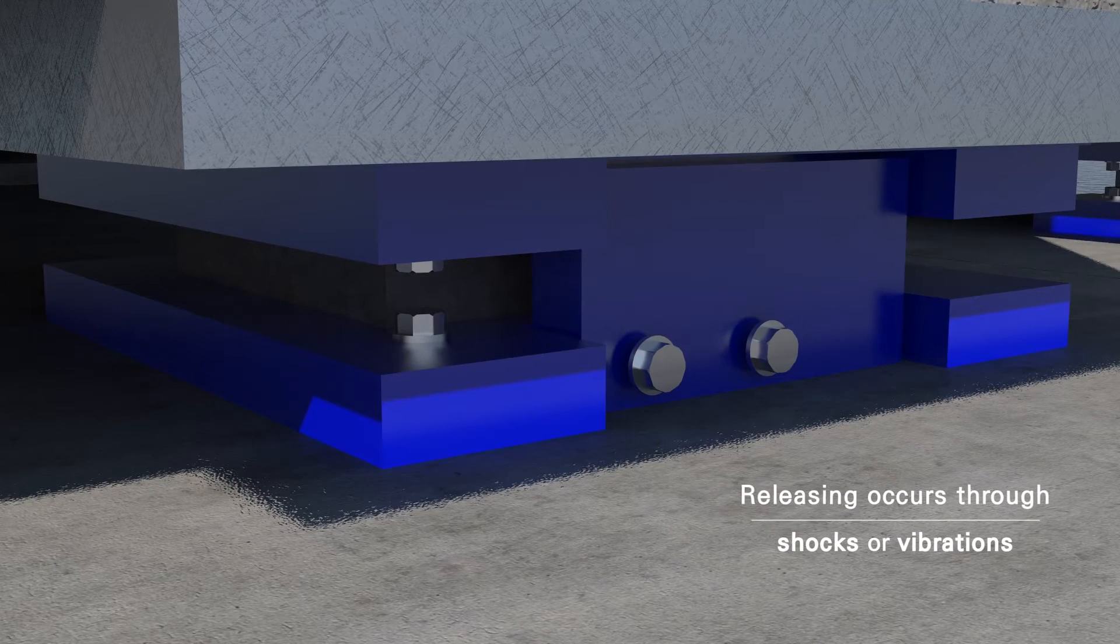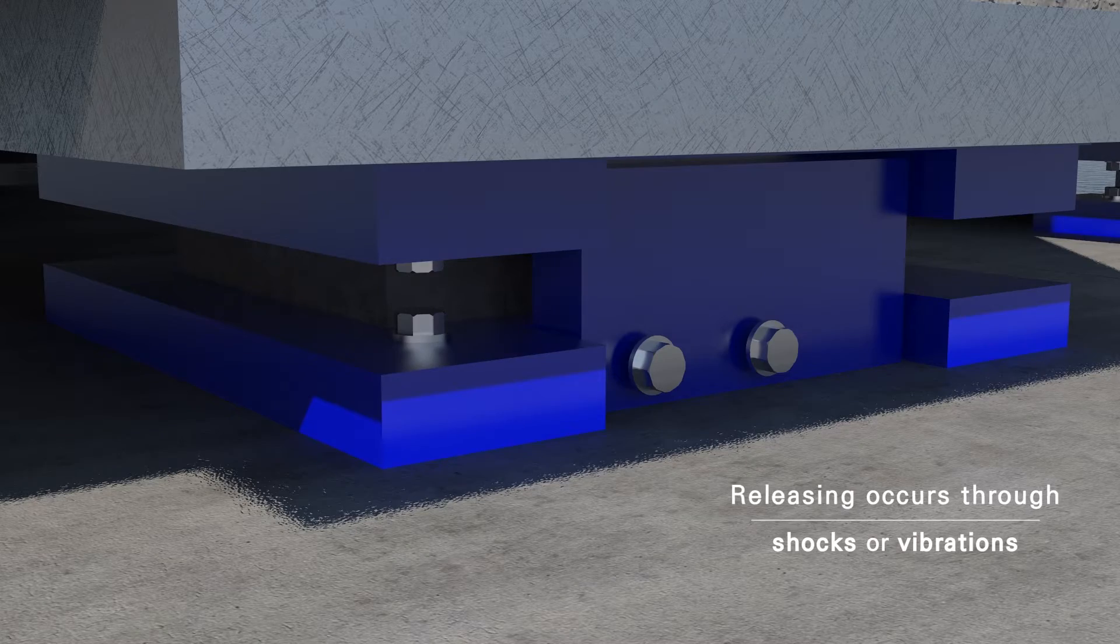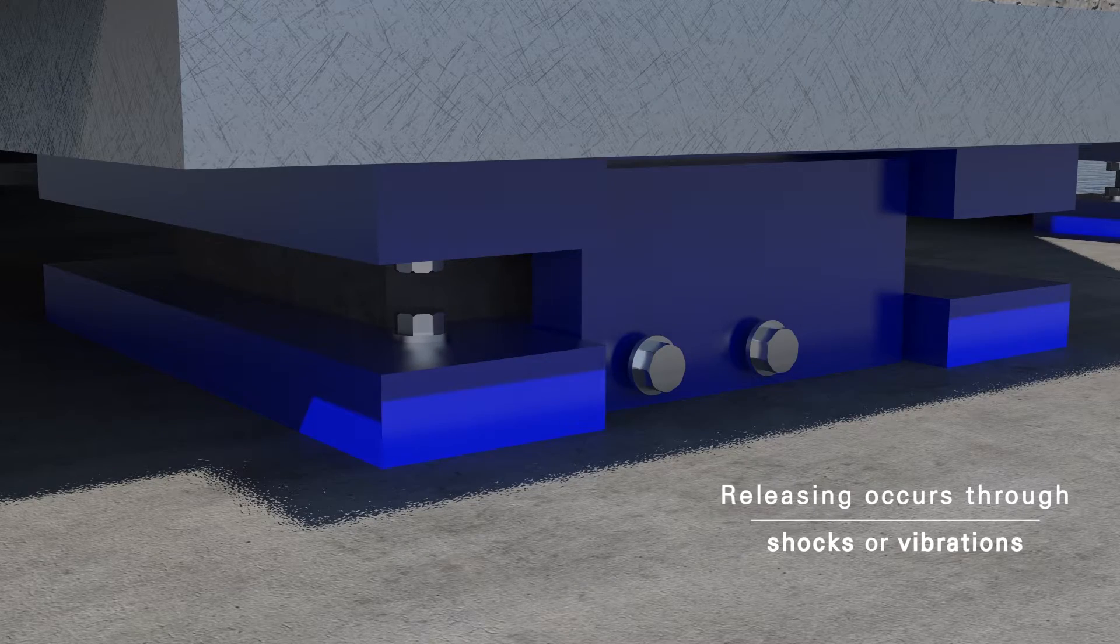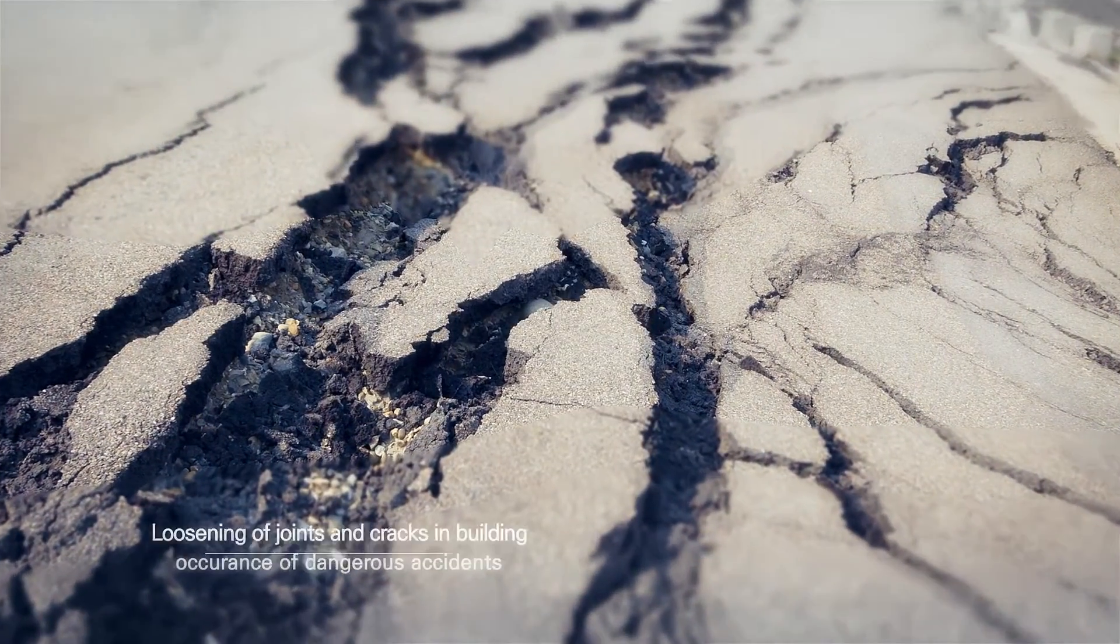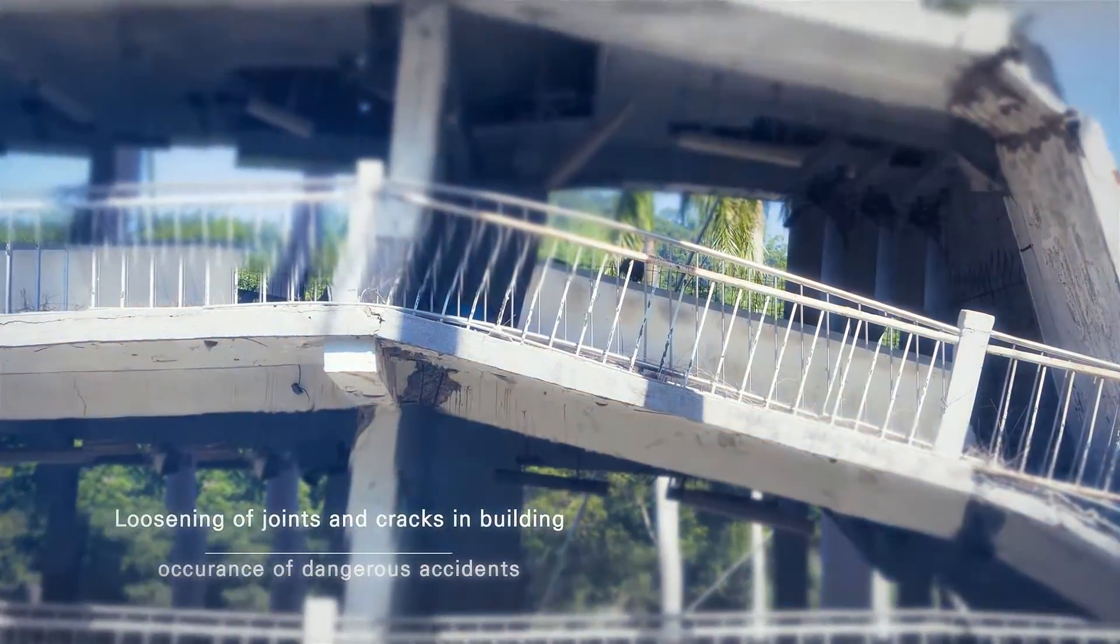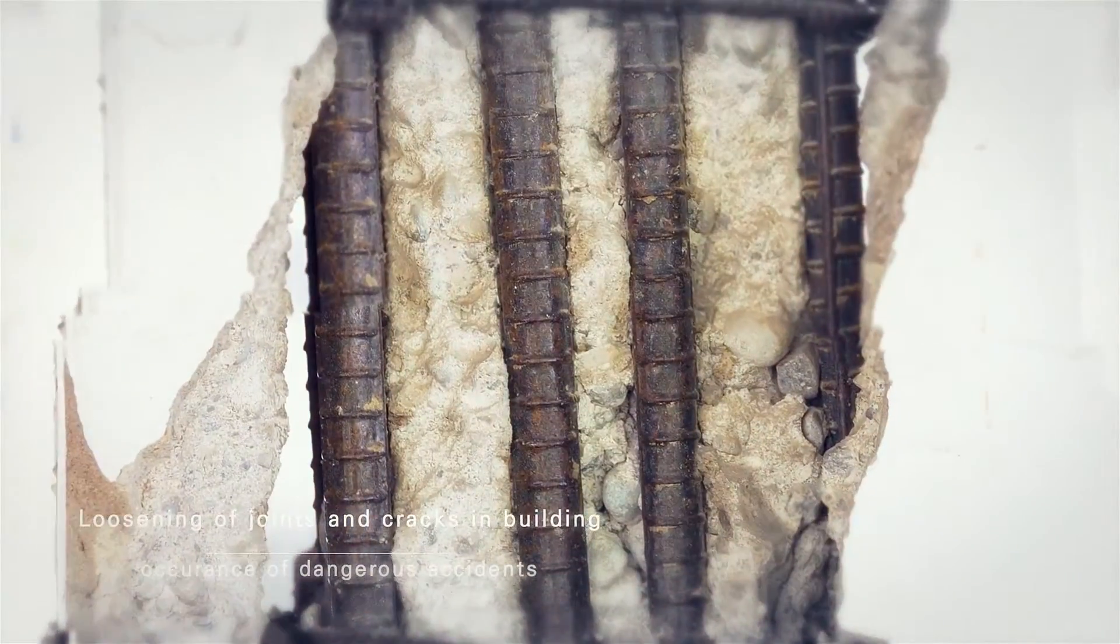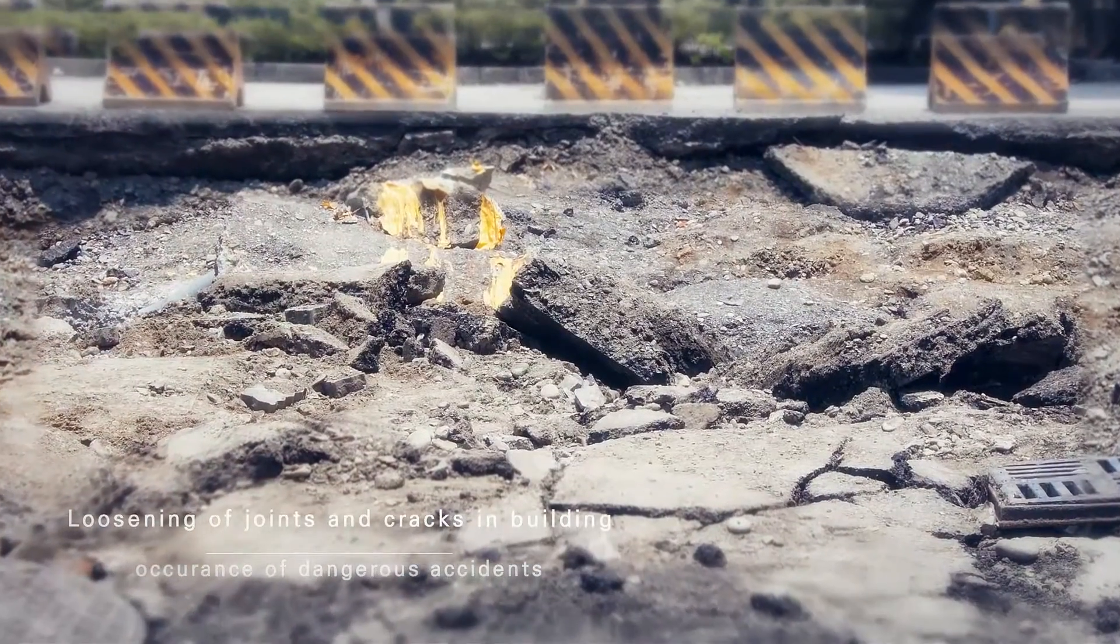These connecting parts may be loosened by external elements like impact or vibration. Terrible accidents or disasters may result if connecting parts loosen and the buildings develop cracks, so it is important to preemptively prevent and manage such damage.